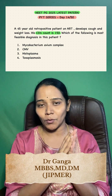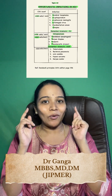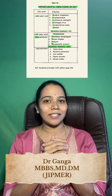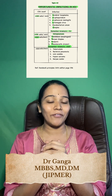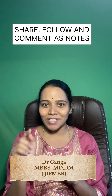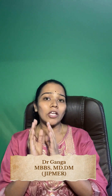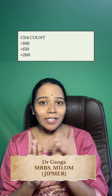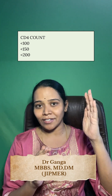Before I go into how to solve this question, if you want the notes made for this topic, follow me and comment 'notes' in the comment section and I'll send them to your DM. First, remember to divide the CD4 counts into: less than 100, less than 150, and less than 200.